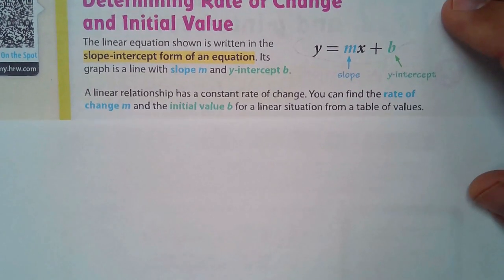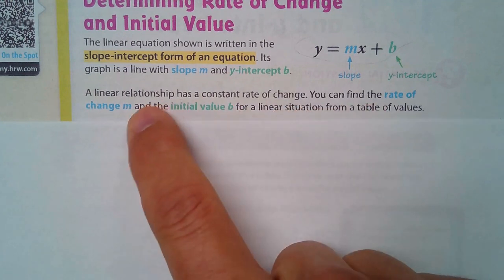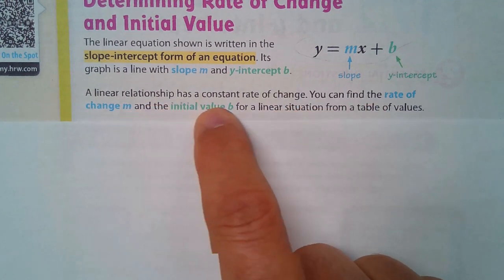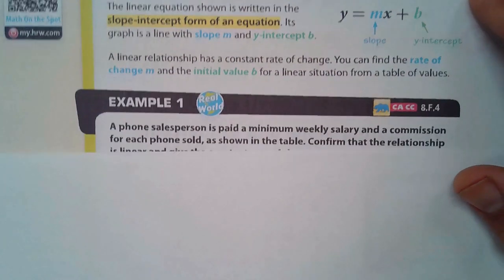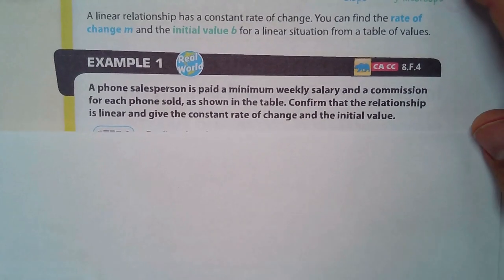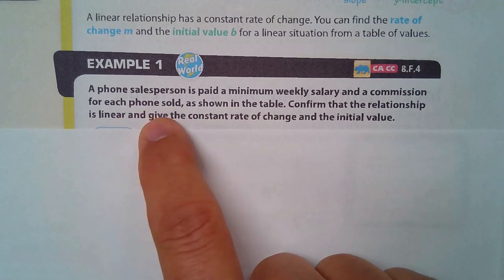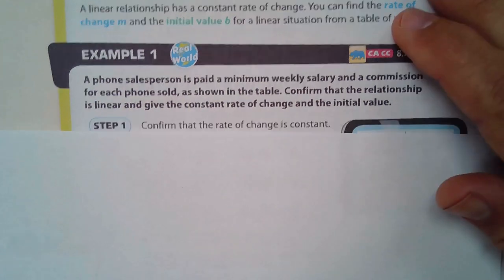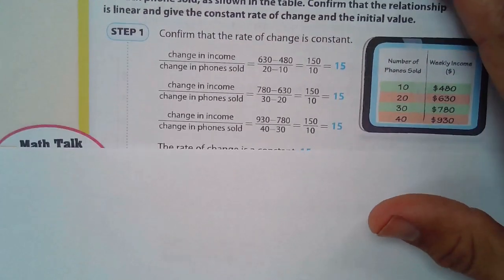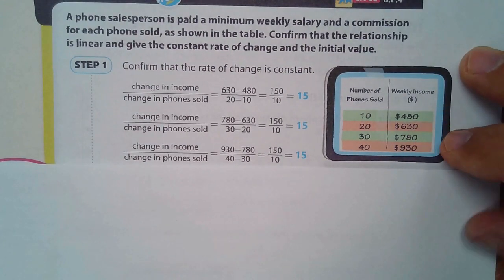A linear relationship has a constant rate of change. You can find the rate of change, which is m, and the initial value b for a linear situation from a table of values. A phone salesperson is paid a minimum weekly salary and a commission for each phone sold. Confirm the relationship is linear and give constant rate of change and initial value. Here are the values and how much she's paid.